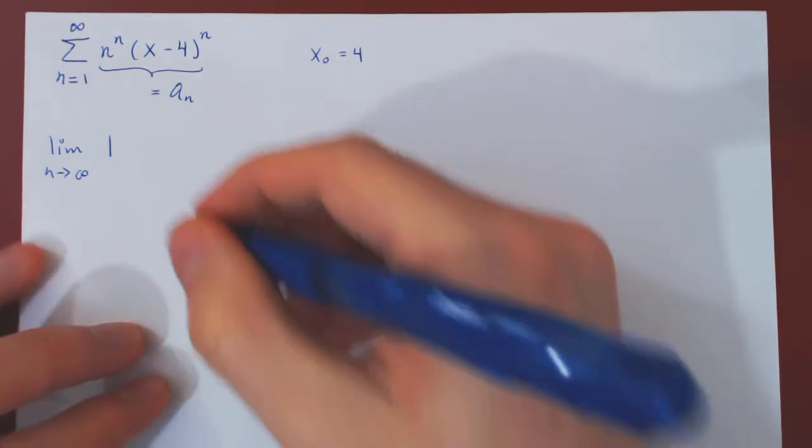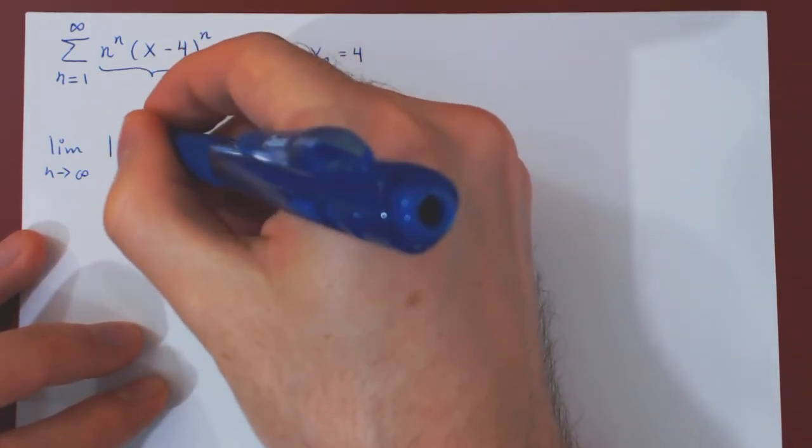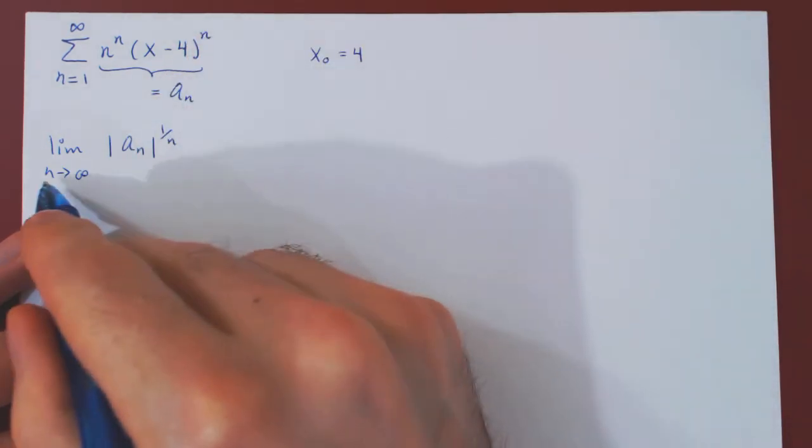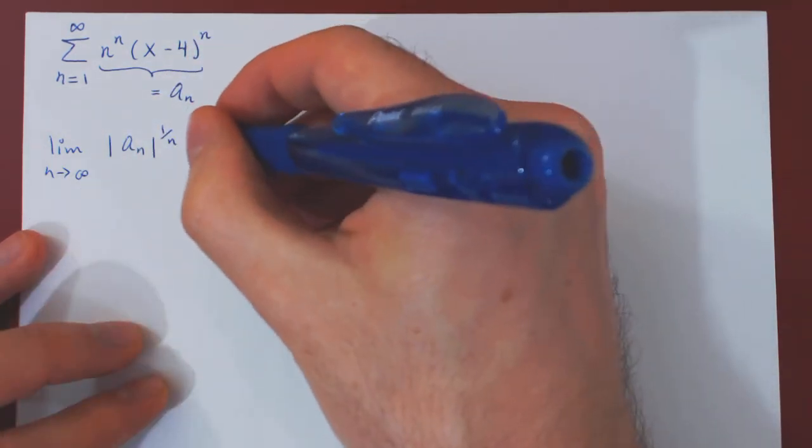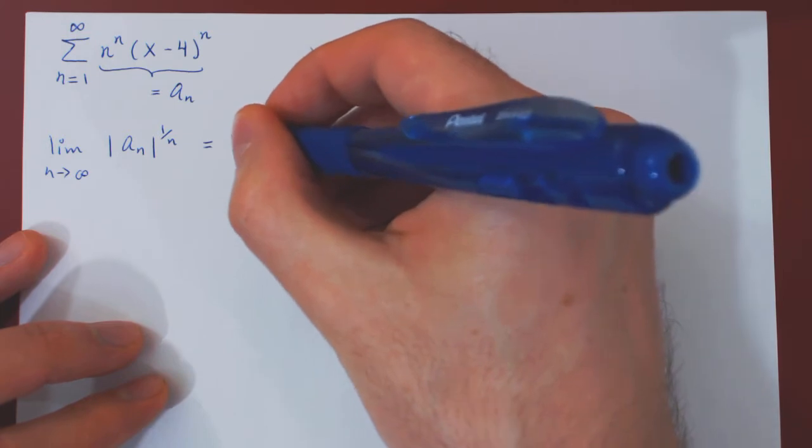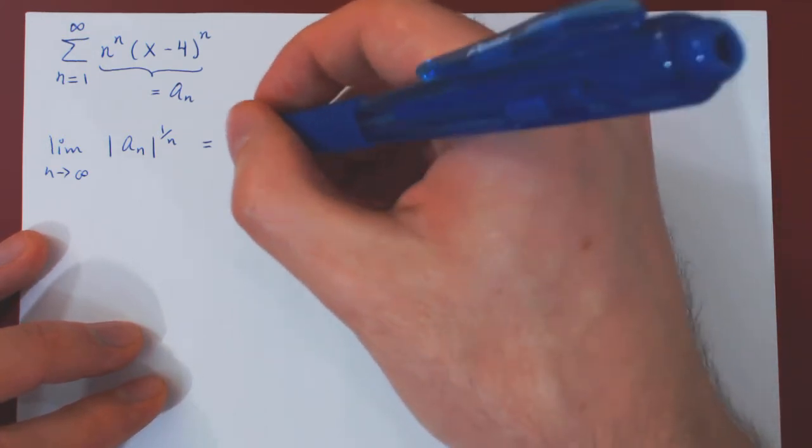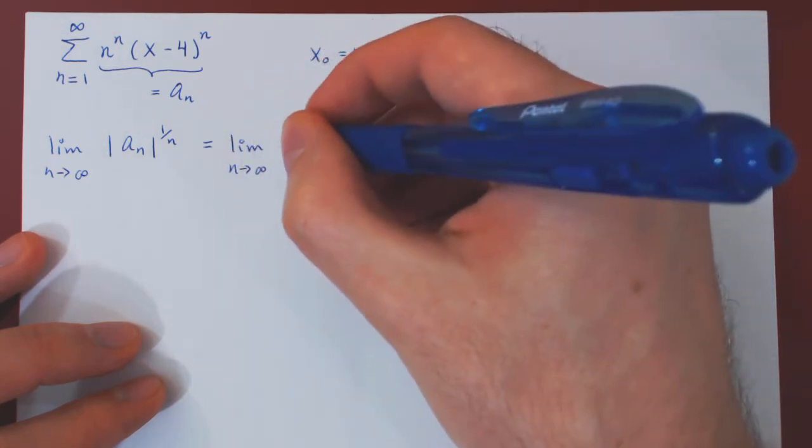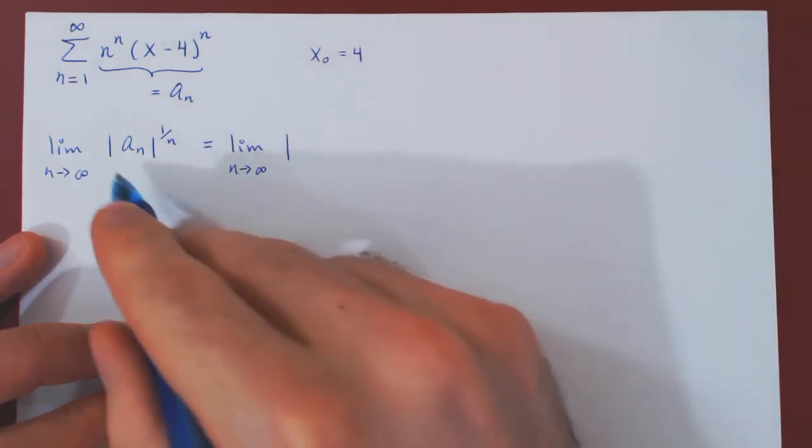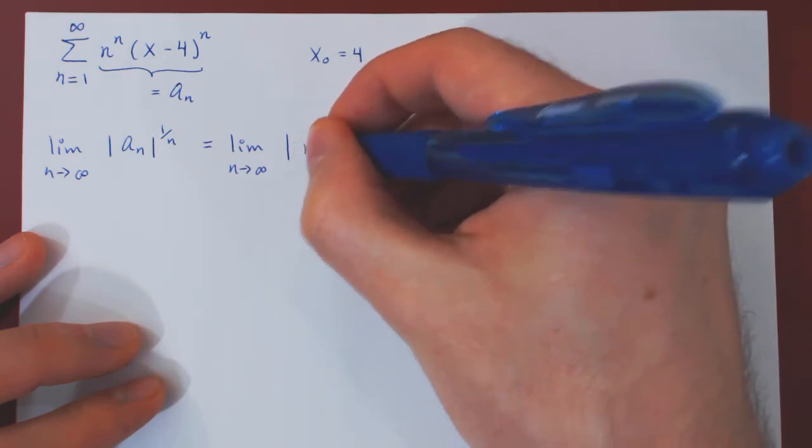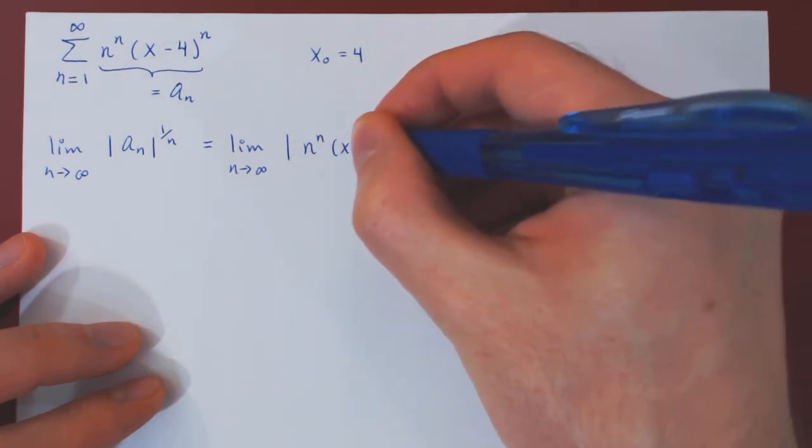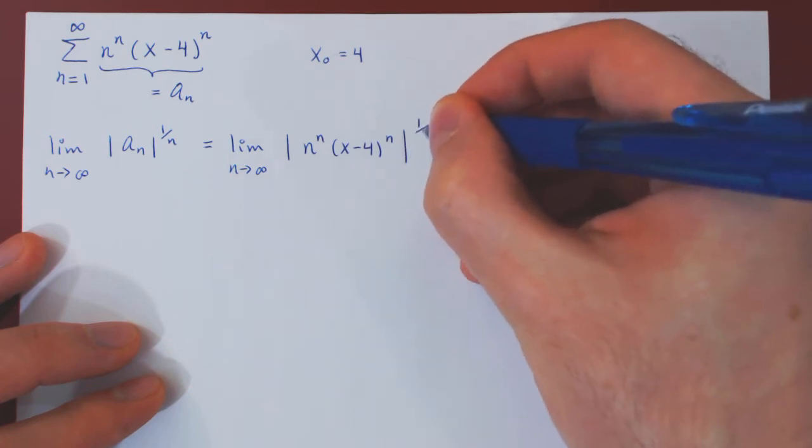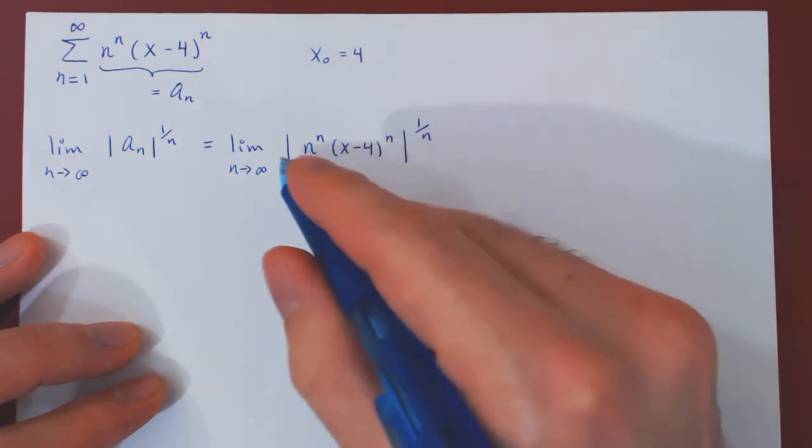Which has to look at the limit of |a_n| raised to the power of 1 over n. Of course, letting n tend to positive infinity. So we can replace, so n to the n, x minus 4 to the n, and we take the nth root of the whole expression.